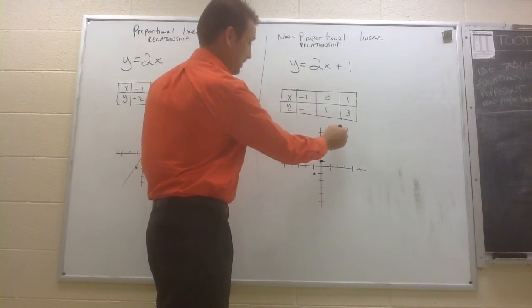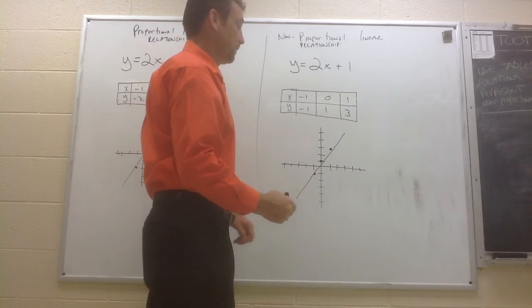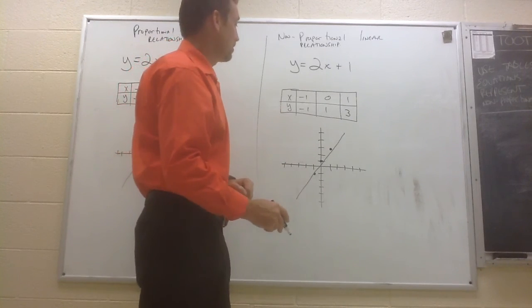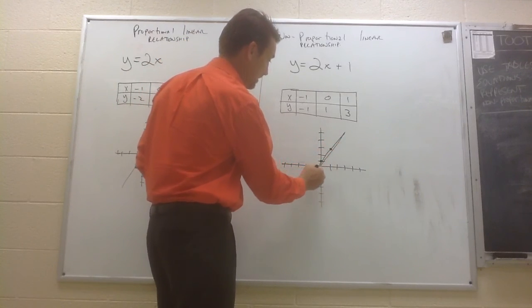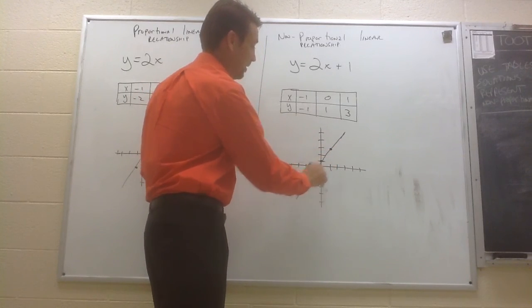And if we were to put a line through those points, you notice that we still have a straight line for a graph, but it no longer passes through the origin. This line in the graph would actually have a y-intercept. It crosses the y-axis at 1.